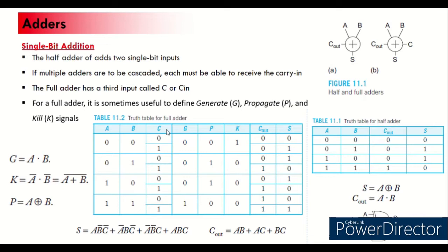For the full adder, we have inputs A, B, and C-in. Wherever a third input exists, or multiple adders are cascaded where each must receive a carry-in, we need a full adder. The full adder truth table gives us sum and C-out. From the truth table, the sum expression is: A·B̄·C̄ + Ā·B·C̄ + Ā·B̄·C + A·B·C.